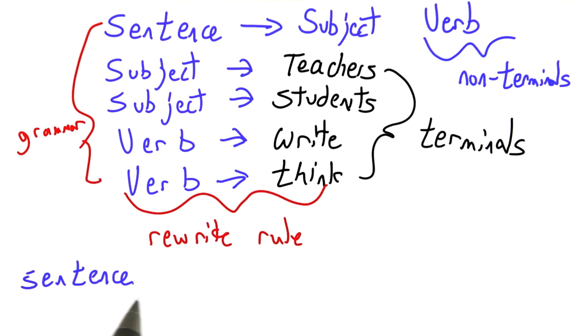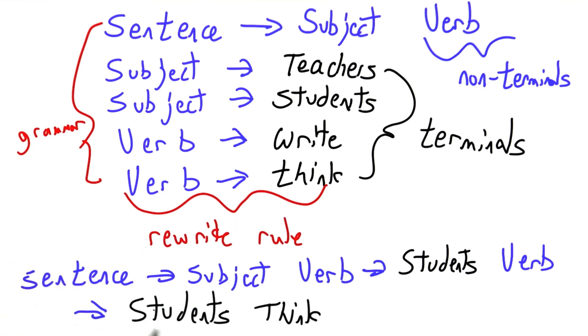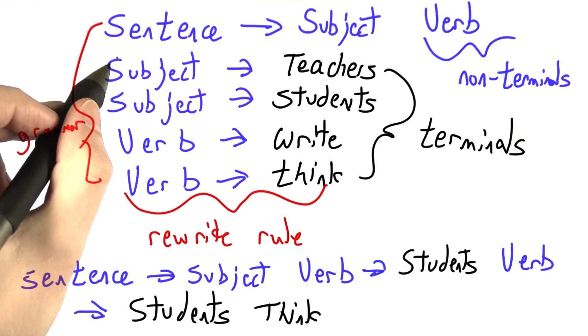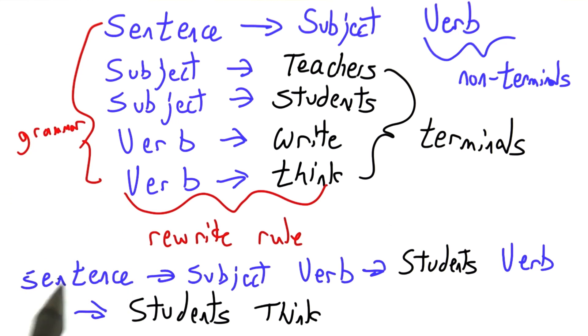So using these rules, if I start with sentence, I can rewrite sentence to be subject-verb, and then I could rewrite that by picking any one of the rules that has subject on the left. Let's pick students. I've only replaced subject, leaving this verb non-terminal alone. But then I could replace verb with any one of these rules. And at this point, I think we're done. The process terminates because I can't replace students or think with anything. So here I've used one, two, three rewrite rules to start from sentence and end up with a valid utterance.